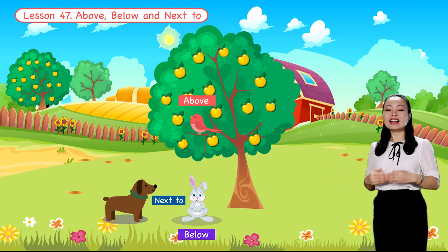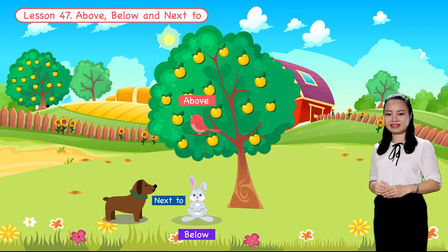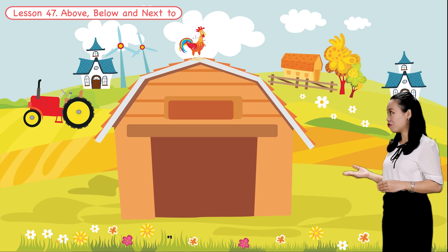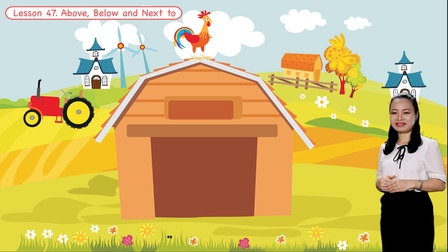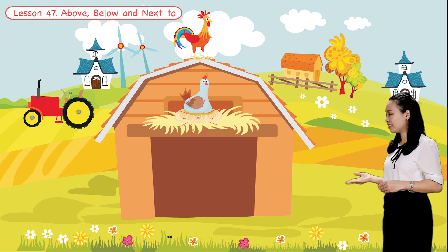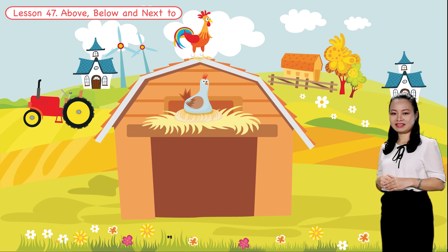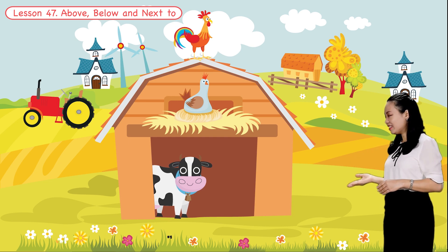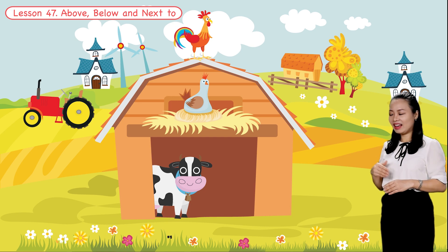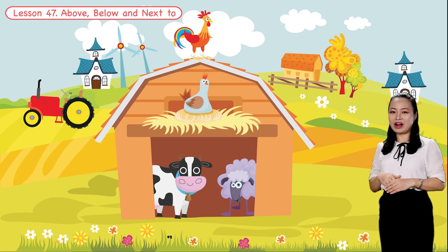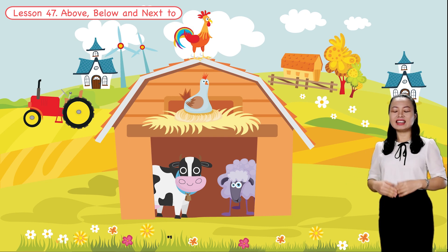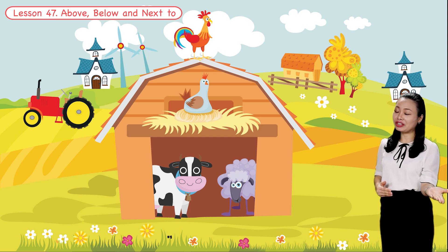Let's have some practice. Look, a rooster is standing on the roof. A hen is hatching her eggs at the roof window. A cow is standing inside the barn. A sheep is also standing inside the barn. Now try to answer my questions.